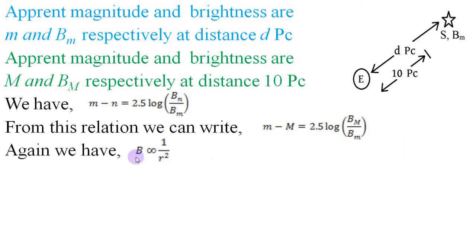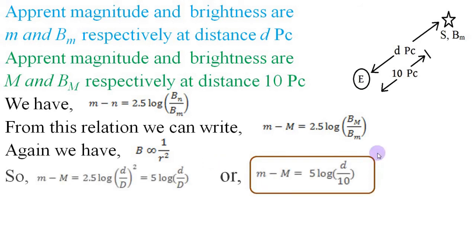Again, we have brightness is inversely proportional to the square of the distance between the star and the point of observation. That means, B ∝ 1/r². In this context, this equation can be written like this. Here, BM is proportional to 1 by capital D² where capital D equals 10 parsec, and Bₘ proportional to 1 by small d². Considering this, if we take the ratio BM by Bₘ, we get small d by capital D whole square. Simplifying this, we get the boxed equation.